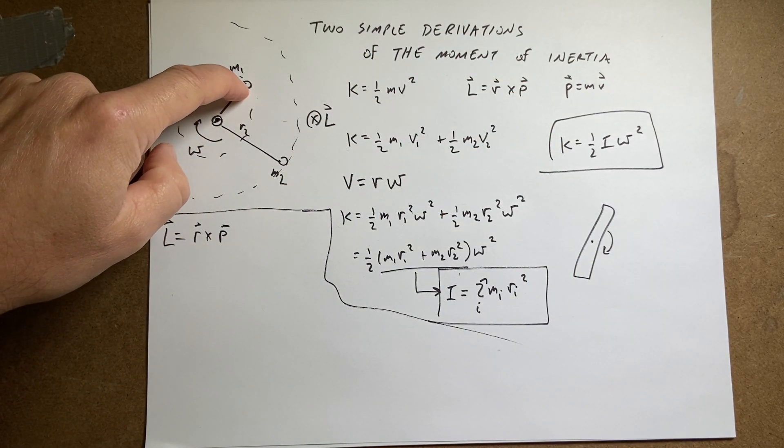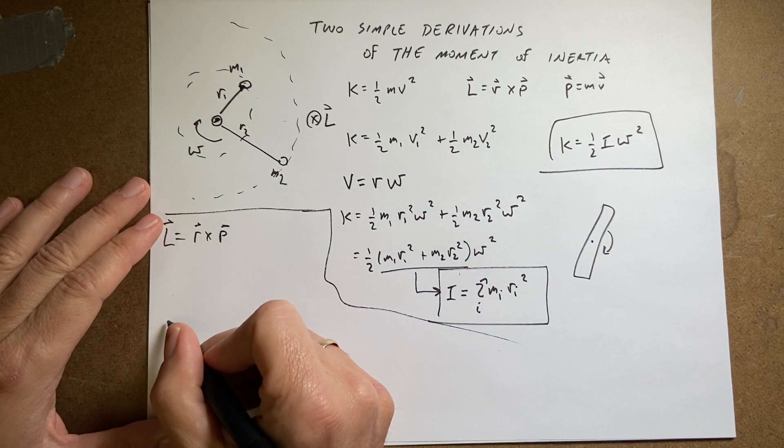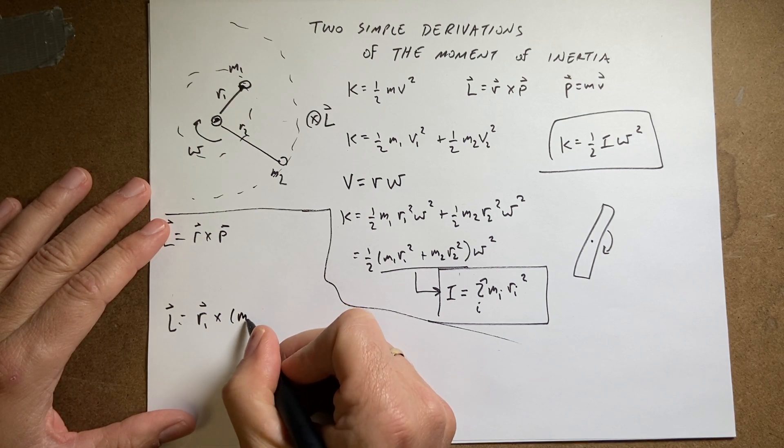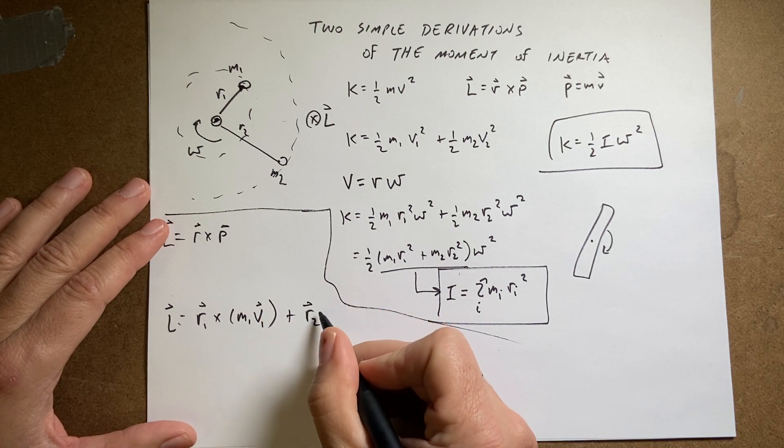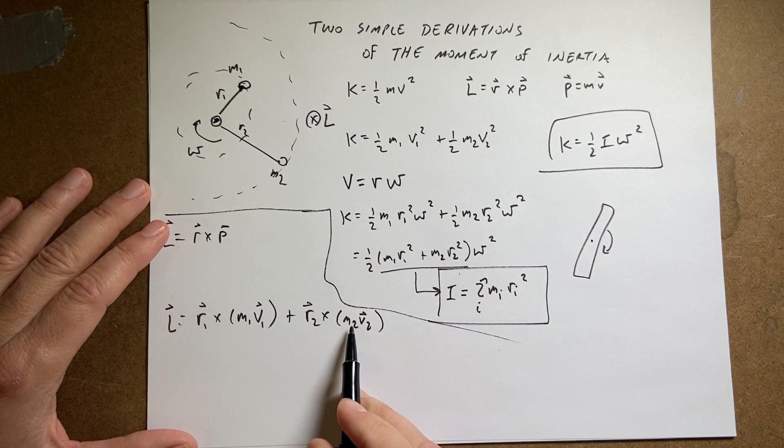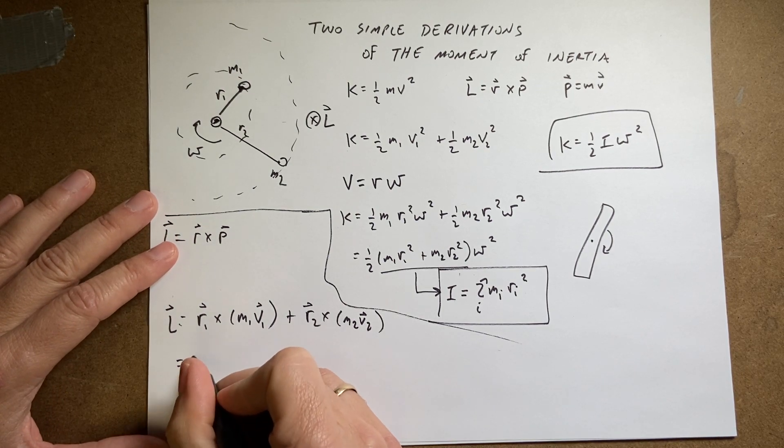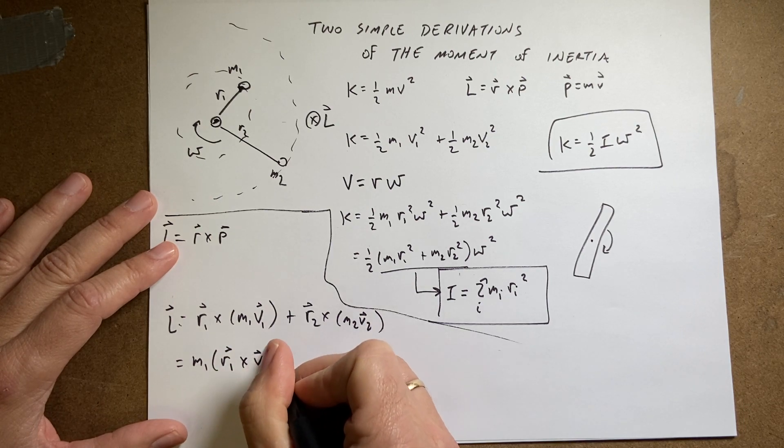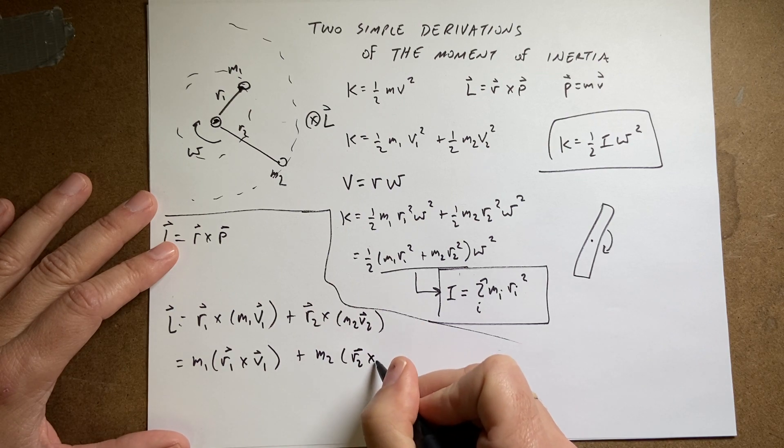But I have the angular momentum of this, because it has an r, and this has a r and a p. So I get l equals r1 cross, I'll call that m1 v1, plus r2 cross m2 v2. Now the mass is a constant, so I can factor that out over here, and I get this is equal to m1 times r1 cross v1, plus m2 times r2 cross v2.